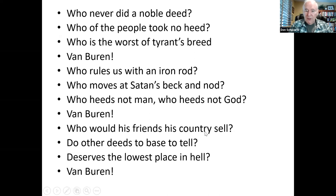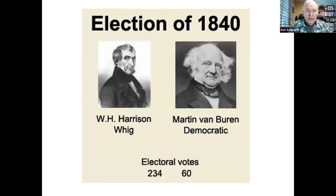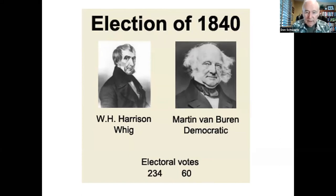Harrison won the election and became the first Whig president. He won 234 electoral votes against just 60 for the Democratic candidate Martin Van Buren. When Harrison won the election, he was 68 years old — the oldest president up to that time. Some people thought he was too old to serve as president.